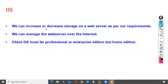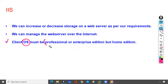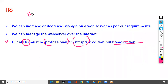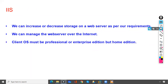We can manage the web server over the internet. If you are using a client operating system like Windows 10, it should be a Professional or Enterprise edition, not the Home edition. If you use the Home edition, you can't install the IIS service — it must be either Professional or Enterprise edition.